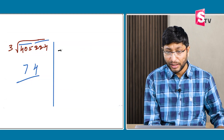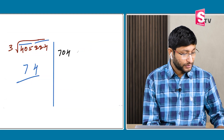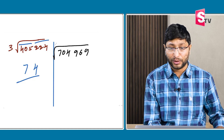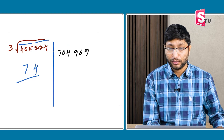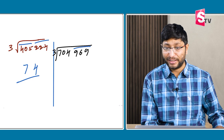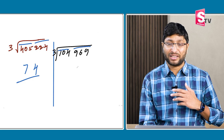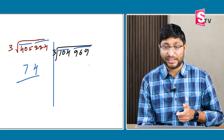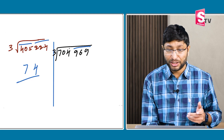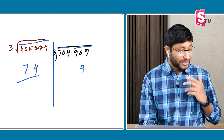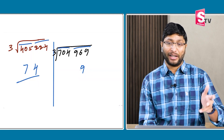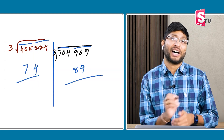Next: cube root of 704969. Split into 704 and 969. The number ends with 9, so the cube root ends with 9. Now, 704 falls between 8 cube (512) and 9 cube (729). The lower number is 8. So the answer is 89.